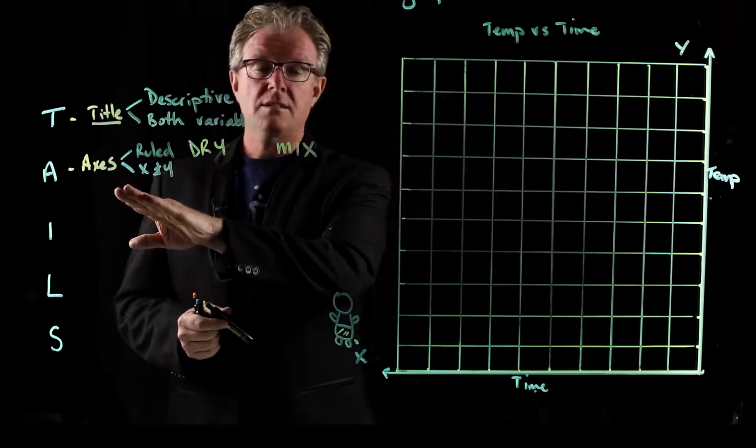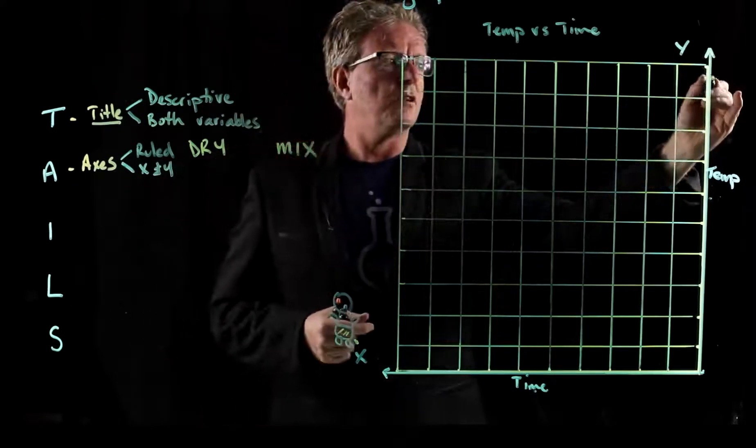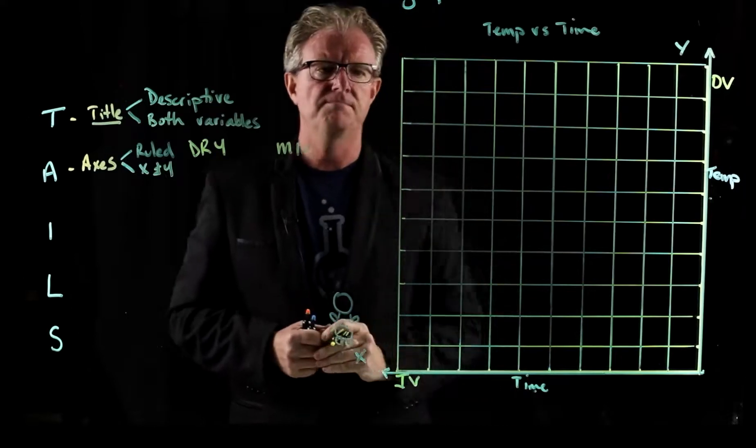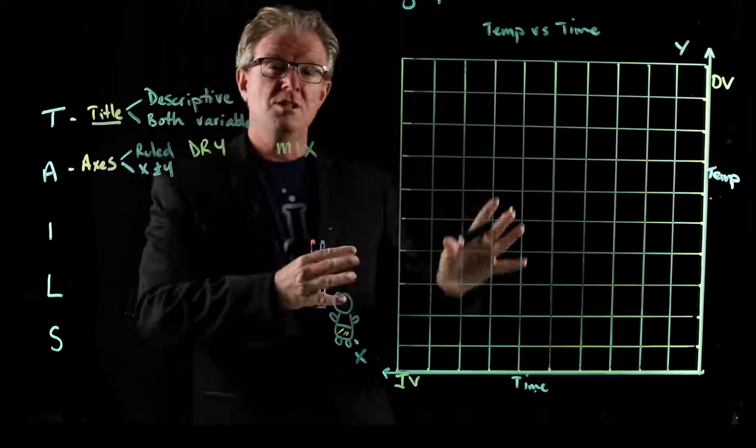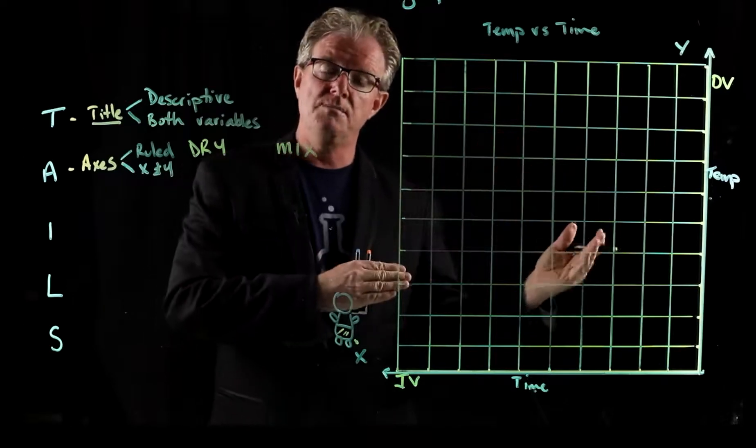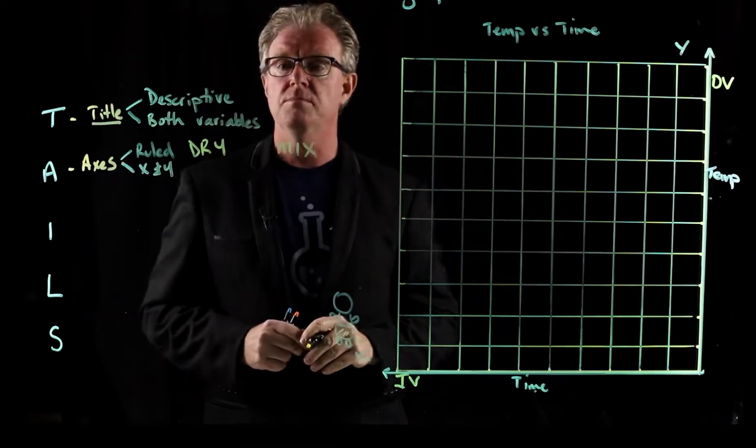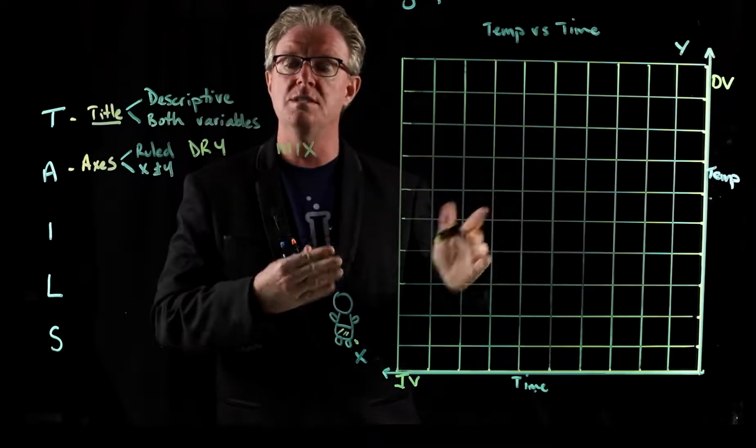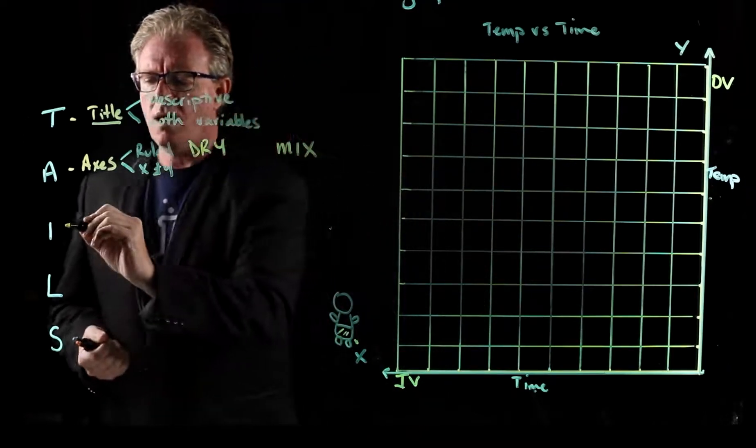So we've set up our axes, we've determined that our dependent variable is here and our independent variable is here. Of course that means you have to decide when you look at a table, what is a dependent and what is an independent variable. And we're going to do that every single time we draw a graph through this series here.